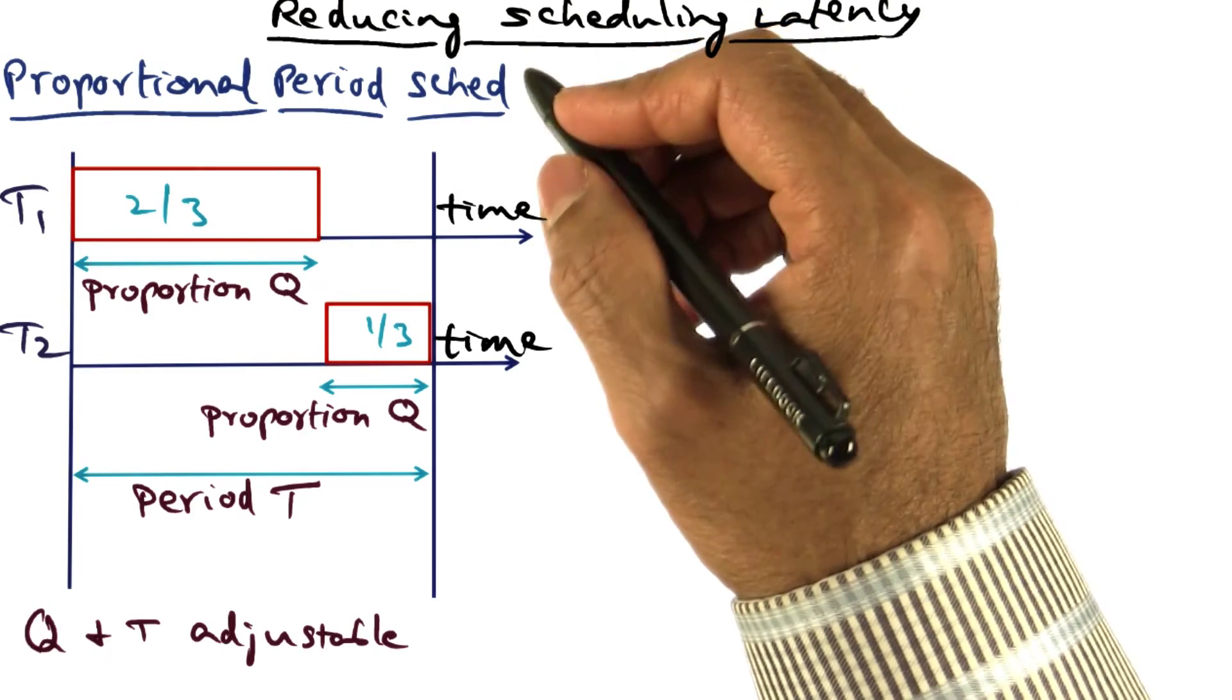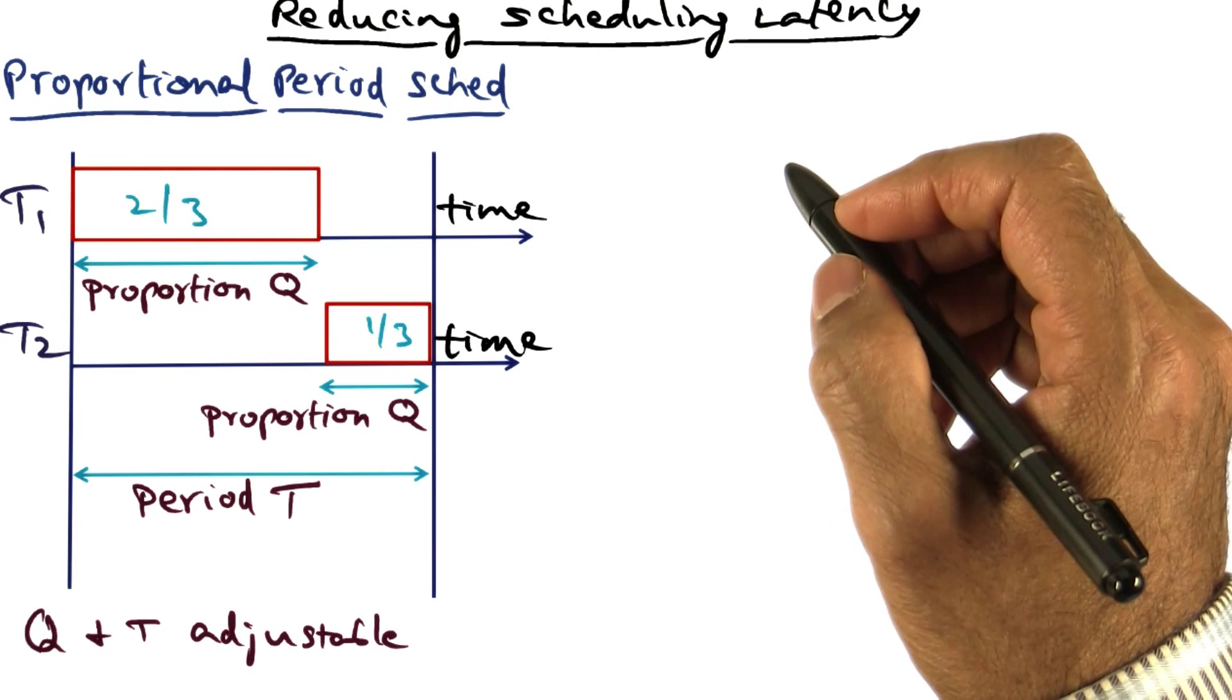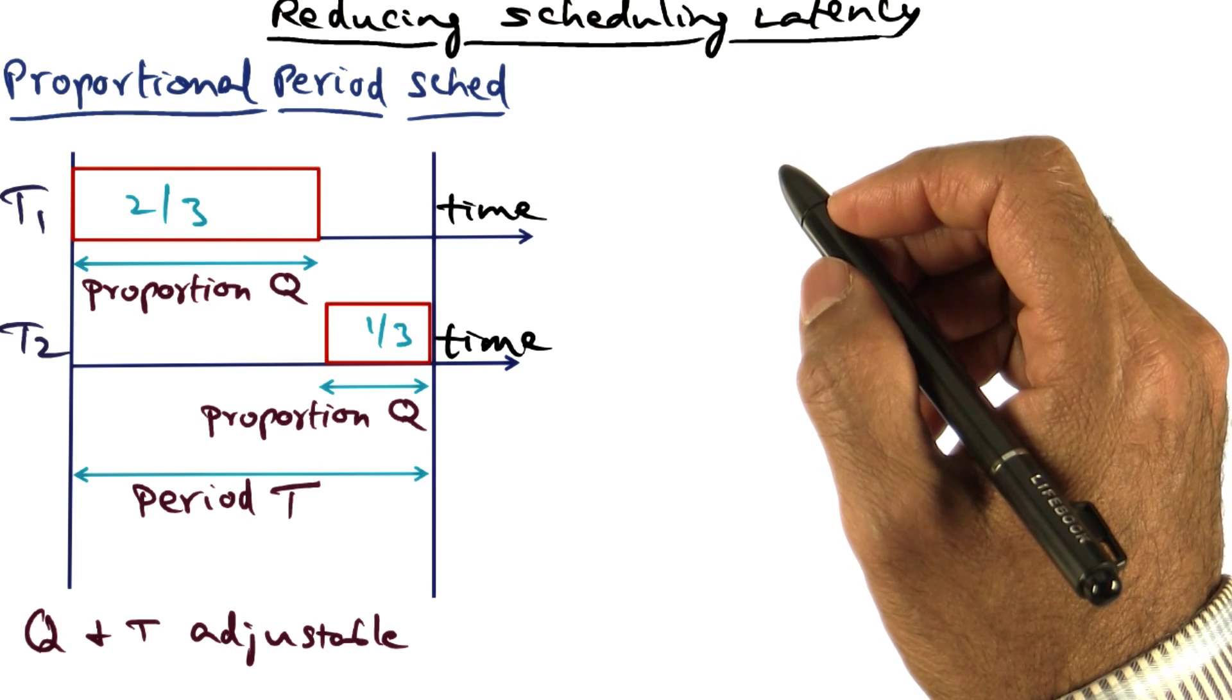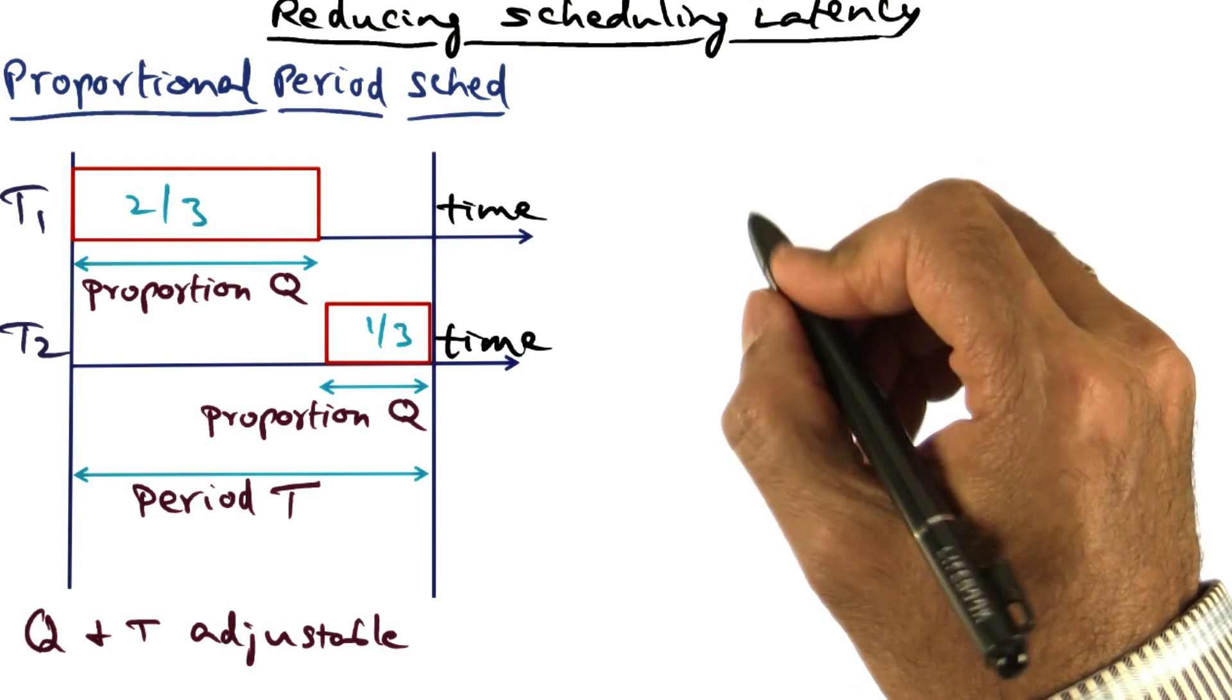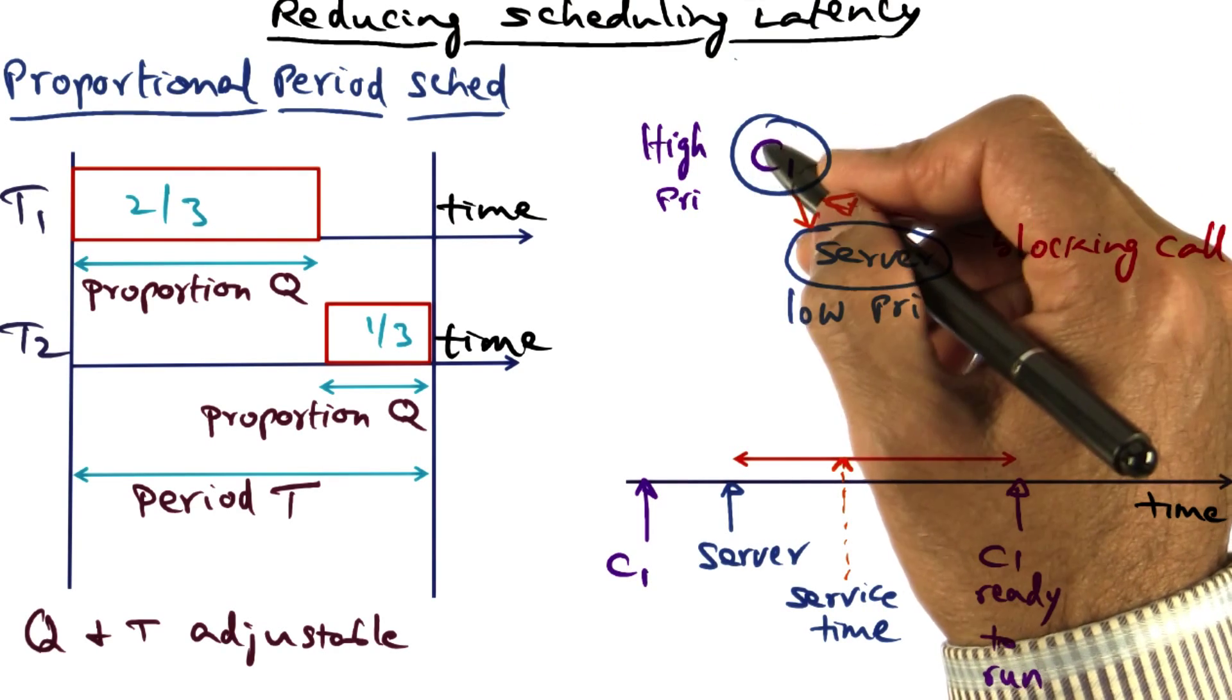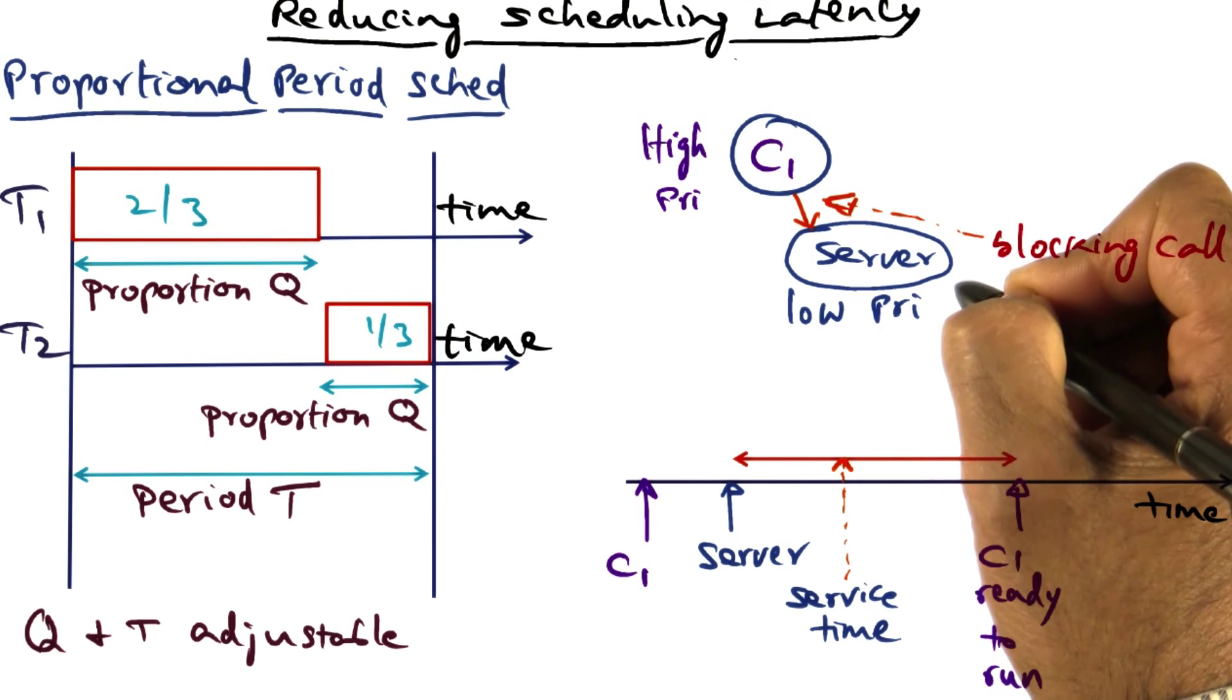The second technique that is used in TS Linux for reducing scheduling latency is to use priority scheduling. And let me motivate that by introducing a problem that plagues real-time tasks, and that is what is called priority inversion. So here is a high priority task, C1, and it needs some service. And it gets that service by calling a server. And this call is a blocking call to the server.